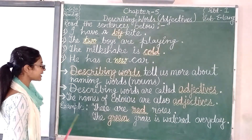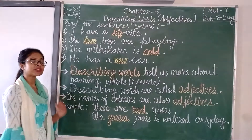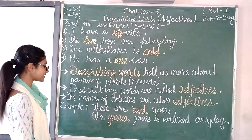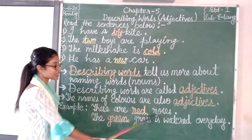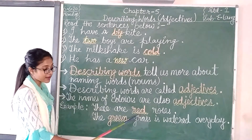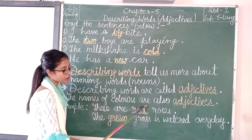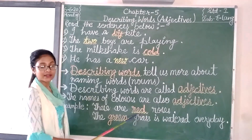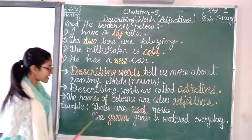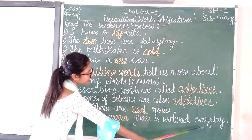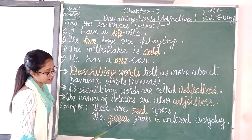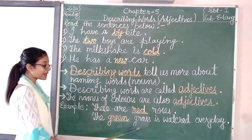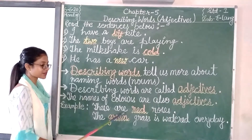One more thing, children — the names of colors are also Adjectives. These are red roses. The word 'red' is describing about 'rose', so the color red is here a describing word — that is an Adjective. In the next sentence: the green grass is watered every day. Here the word 'green' is describing about 'grass', so 'green' is the describing word — that is an Adjective.